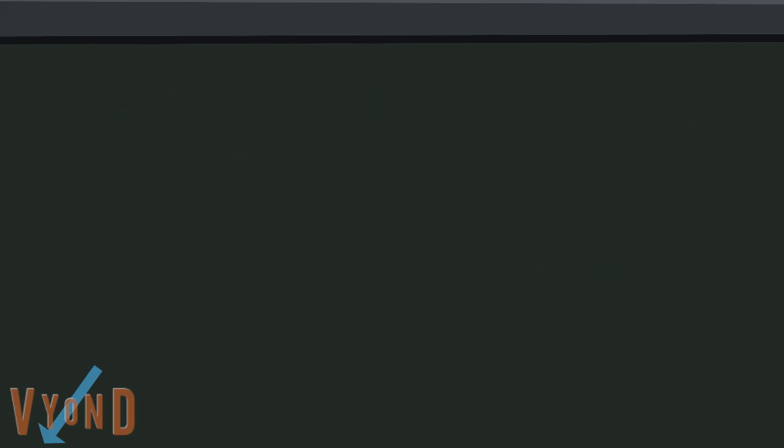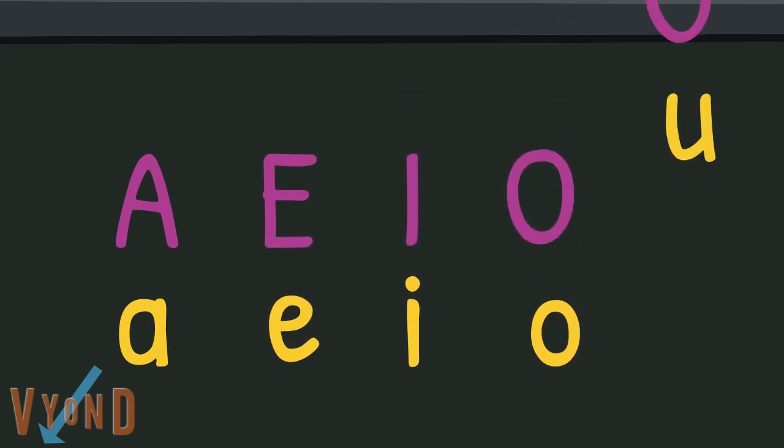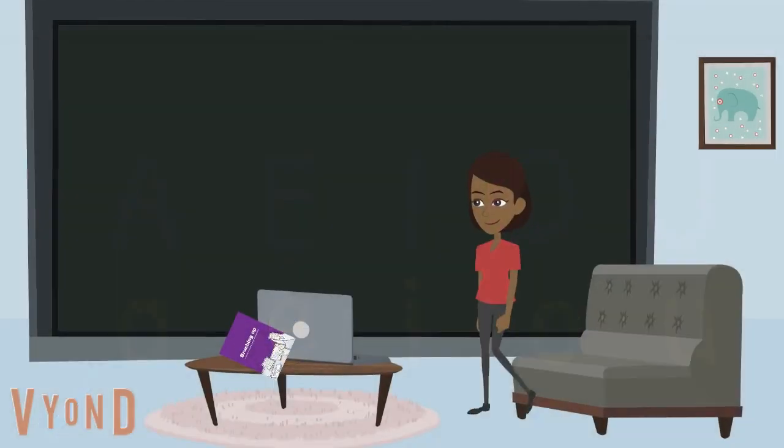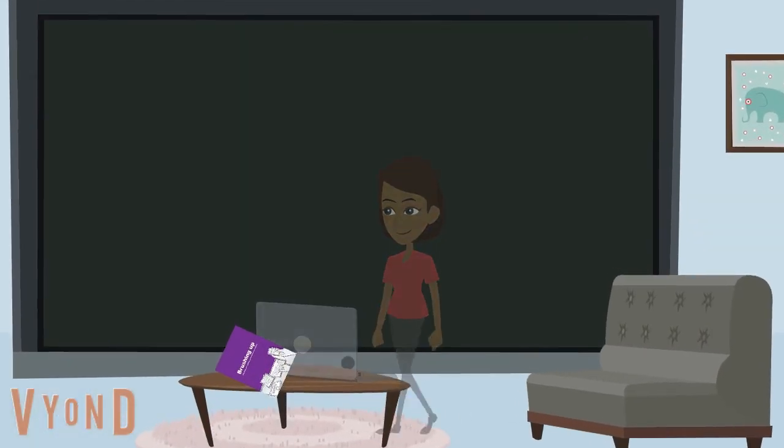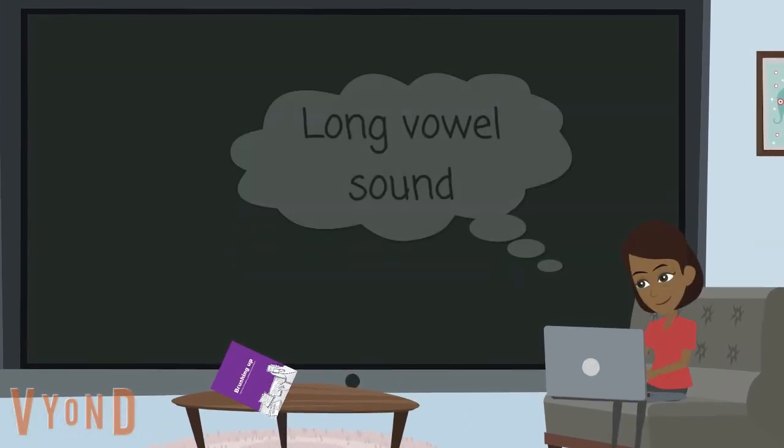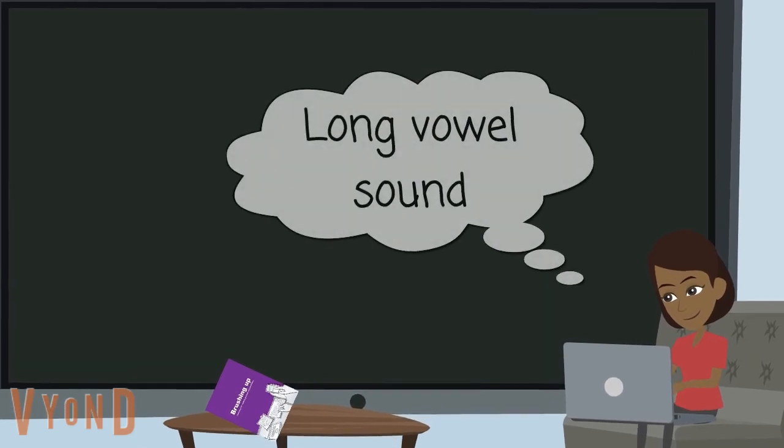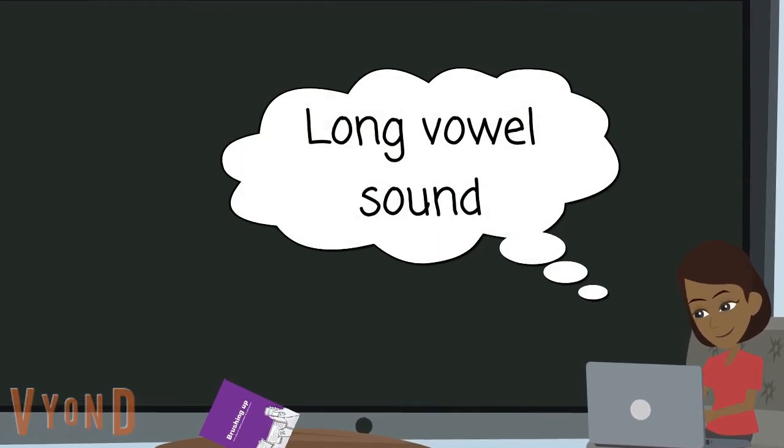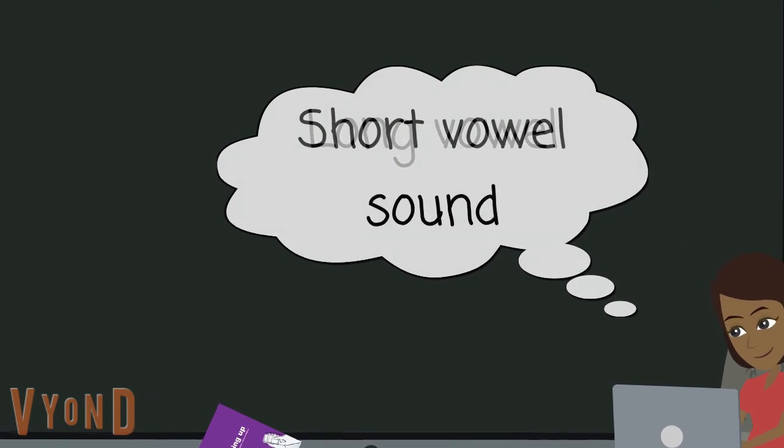Let's take a closer look at them. Our 5 vowels are A, E, I, O, U. Each vowel has two sounds. It can have a long sound where it says its own name: A, E, I, O, U, or a short sound.